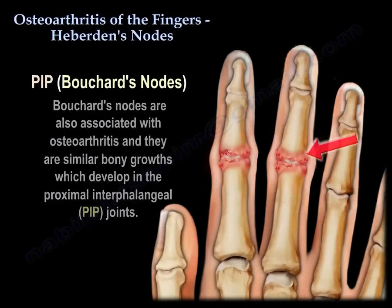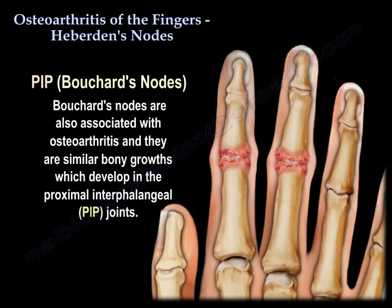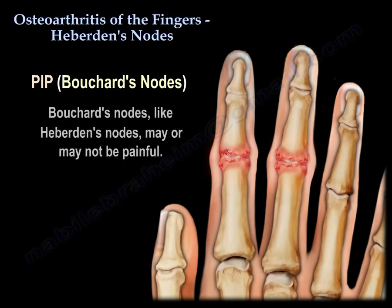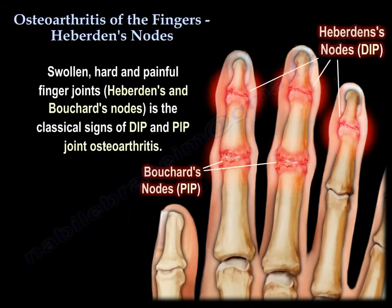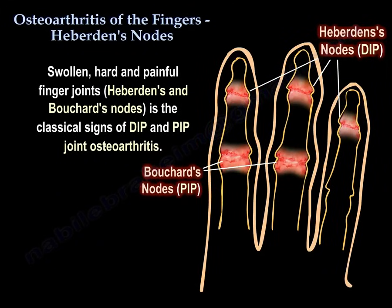At the PIP, the proximal interphalangeal joint, you get Bouchard's nodes. Bouchard's nodes are also associated with osteoarthritis, and are similar bony growths which develop in the PIP joints. Bouchard's nodes, like Heberden's nodes, may or may not be painful. Swollen, hard, and painful finger joints — Heberden's and Bouchard's nodes are the classic signs of DIP and PIP joint osteoarthritis.